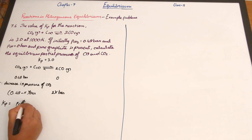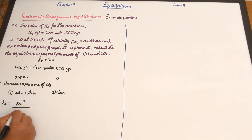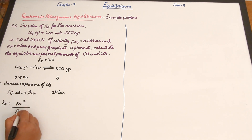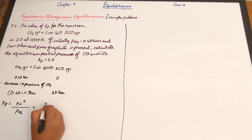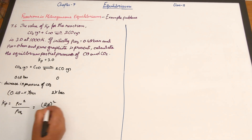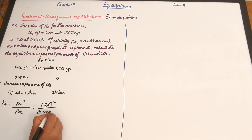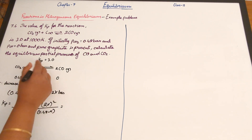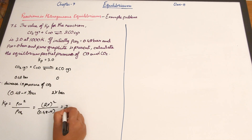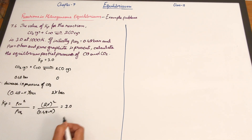Kp equals the partial pressure of carbon monoxide squared divided by the partial pressure of carbon dioxide, so that is equal to (2X)² divided by (0.48 minus X), and this equals 3.0.